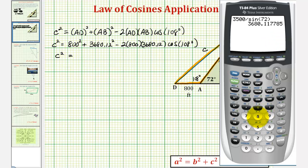We already know we're in degree mode, so we'll press 800 squared plus 3680.12 squared minus two times 800 times 3680.12 times cosine of 108 degrees. And we already know we're in degree mode, so we'll press enter. So C squared is equal to 16,834.61.